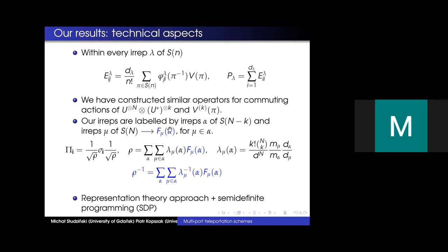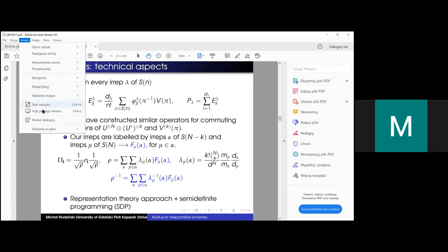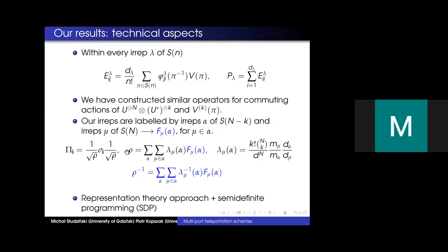From standard representation theory, within every sector labeled by Young diagram λ one can construct an orthonormal operator basis using matrix elements of representations and the corresponding projector onto each irreducible space. We have constructed analogous operators for the skew action of the unitary group and partially transposed permutation operators, where labels are pairs (α, μ) corresponding to irreps of S_{n-k} and S_n. This allows us to diagonalize the operator ρ, which is the sum of all signal states.